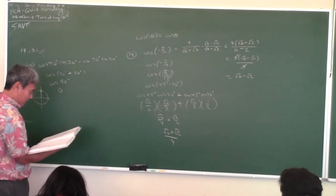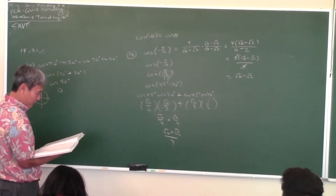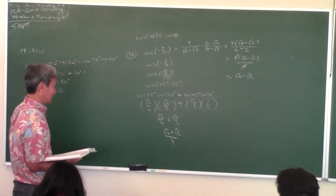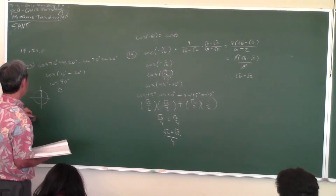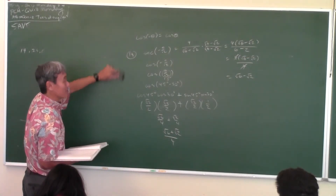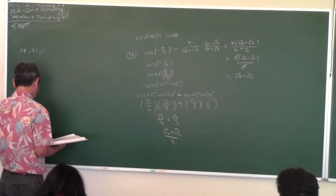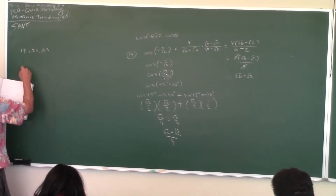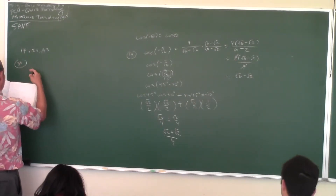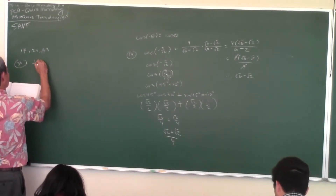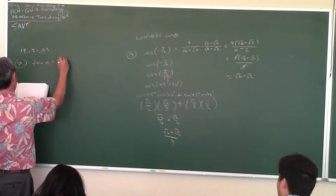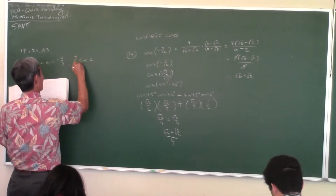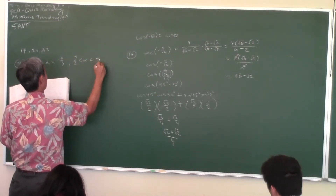Everybody here could do problems 31 to 35? No? Then let's do number 33. You're going to have one or two of these. These are the three examples I gave you last time — the three different types of problems.